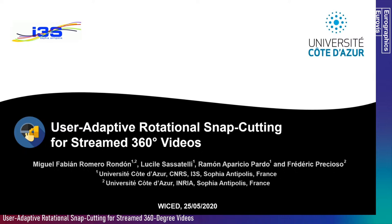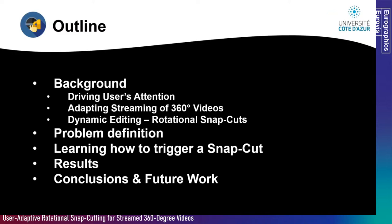Hello everyone, I'm Miguel Romero and today I will present our work on user adaptive rotational snap cutting for streaming 360 degree videos. In this talk, I will start by giving a brief introduction on why driving the user's attention is important from the perspective of the multimedia network community. Then I will present the problem of adaptive streaming of 360 degree videos and the different solutions for it. One such solution is dynamic editing with rotational snap cuts. I will then present the model of the dynamic decision problem of snap cut triggering, and the method we use to learn how to trigger the snap cuts.